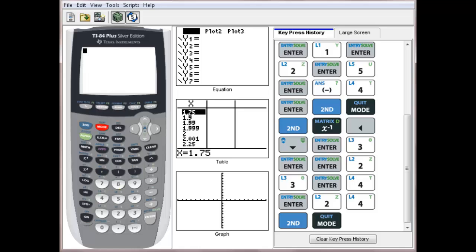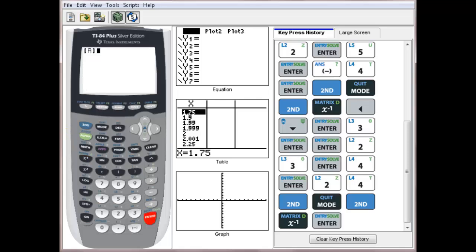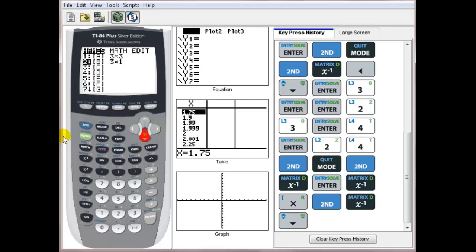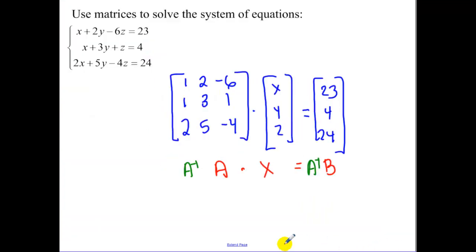Exit back to your home screen. And remember we do A inverse, so 2nd matrix A inverse times by matrix B. Press enter again. And that gets us our values for X, Y, and Z. From our calculator, we got X is equal to 1, Y is equal to 2, and Z is equal to negative 3.